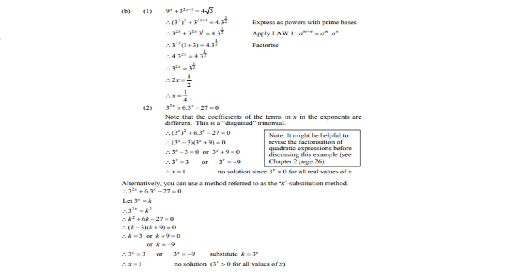Next you factorize the trinomial like we normally do and therefore the first bracket equals zero or the second bracket equals zero. So there you are, 3 to the power x equals 3. 3 exponent is 1, so therefore x equals 1.